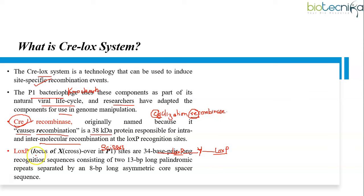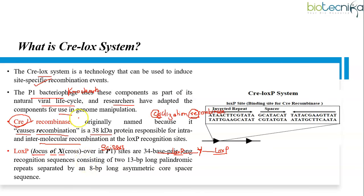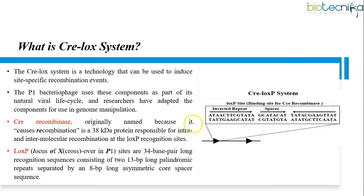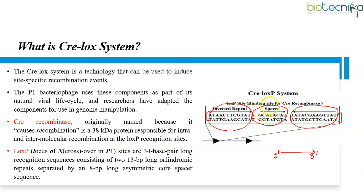LOX-P, which stands for locus of X-over in P1, are sites which are 34 base pairs long. The 34 base pair long recognition sequence consists of 13 base pair long palindromic repeats — sequences that read the same from 5' to 3' in both strands of DNA — separated by an 8 base pair long asymmetric core spacer sequence. The asymmetry in this core spacer sequence gives the LOX-P site its directionality.